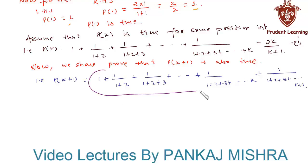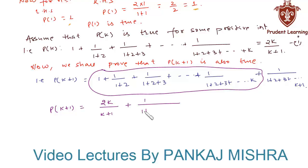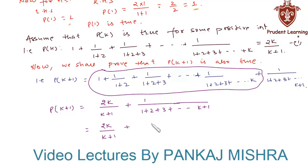From equation 1, we substitute the value of the partial sum as 2k upon (k plus 1). So we have P(k plus 1) equals 2k upon (k plus 1) plus 1 upon (1 plus 2 plus 3 up to k plus 1).